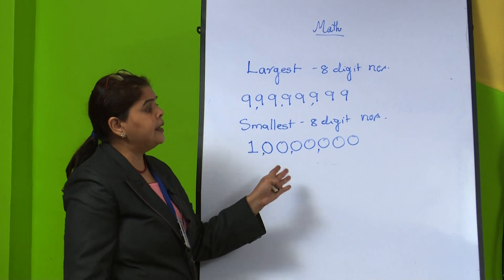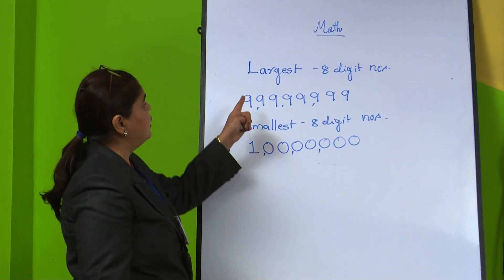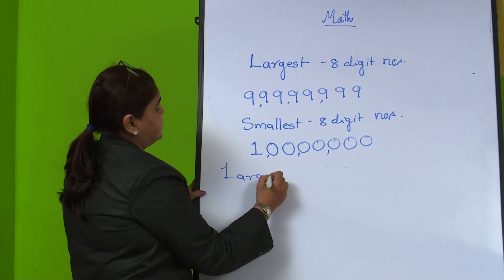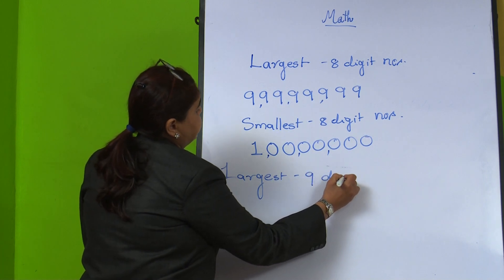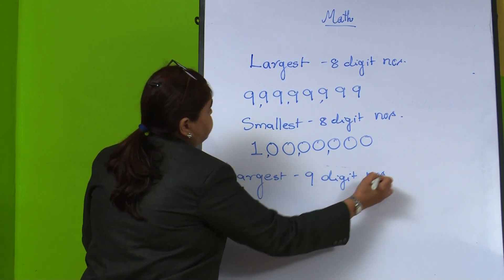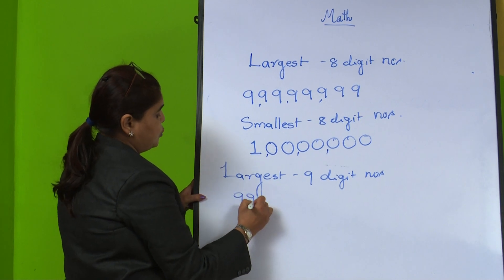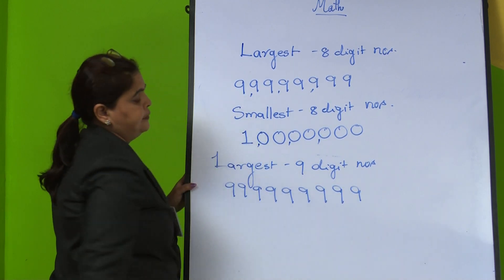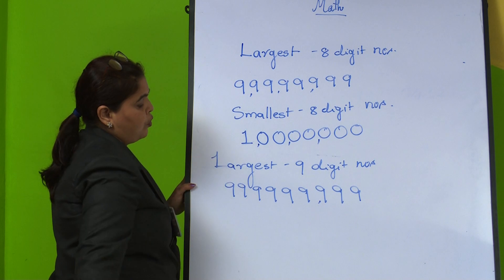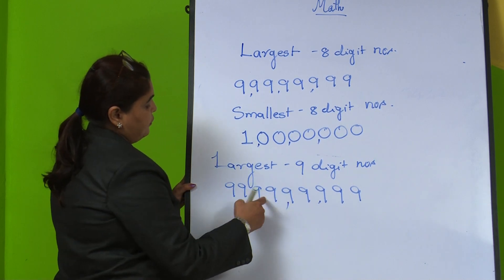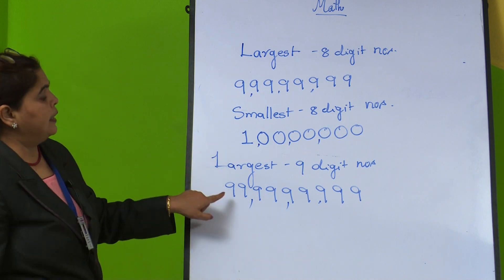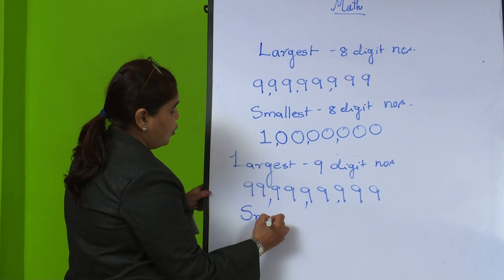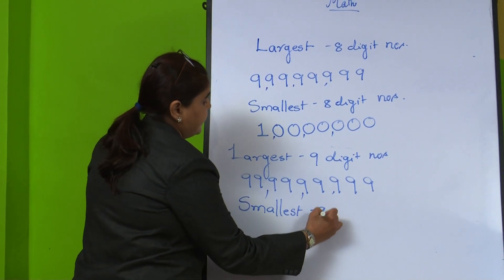What will be the 9-digit number? The largest 9-digit number means we write 9 nine times. Insert comma after 3 digits, after 2 digits, and after 2 digits. This is the largest 9-digit number. Now we will see the smallest 9-digit number.